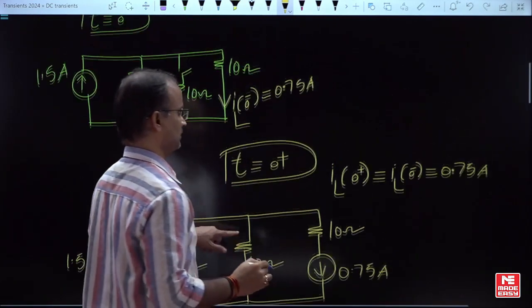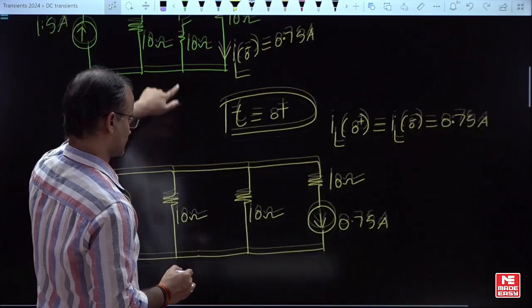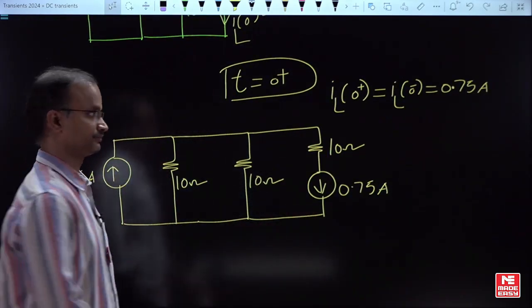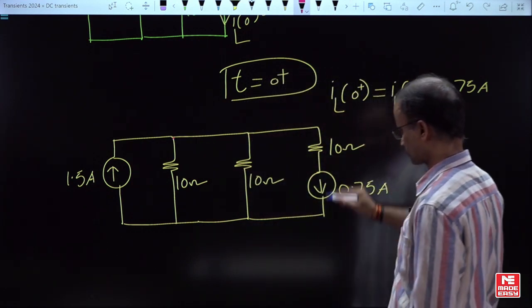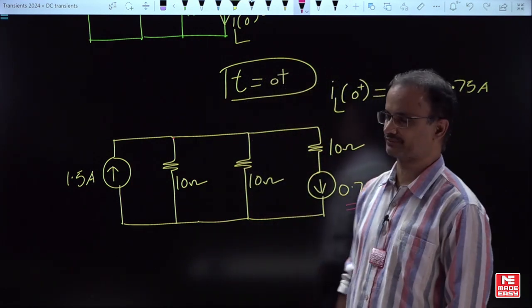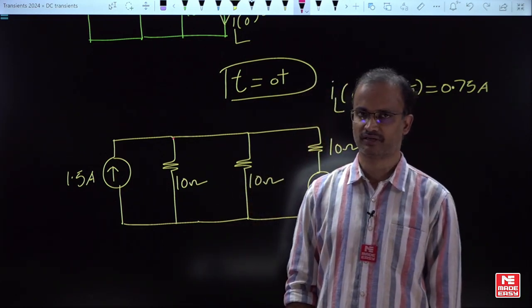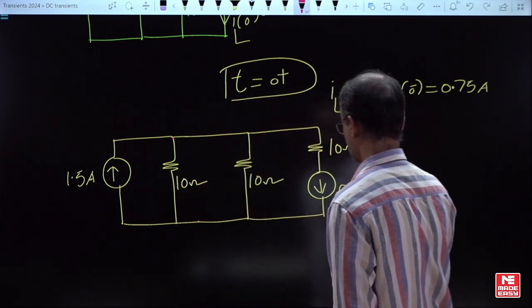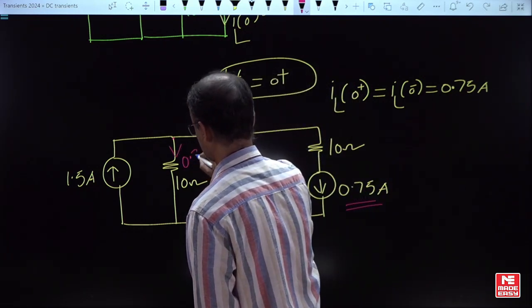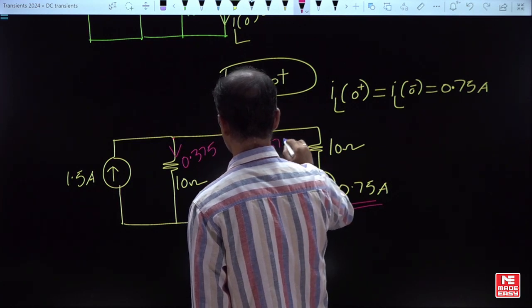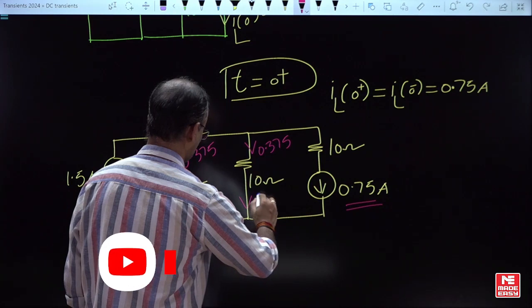Applying KCL: 1.5A is the incoming current. In the last branch (inductor branch), the outgoing current is 0.75A. So the remaining current is 1.5 − 0.75 = 0.75A, which is equally distributed between the two remaining branches: 0.75 / 2 = 0.375A each. As per the given information, we need the response for branch 2, so I(0⁺) = 0.375A. The initial current is now determined.